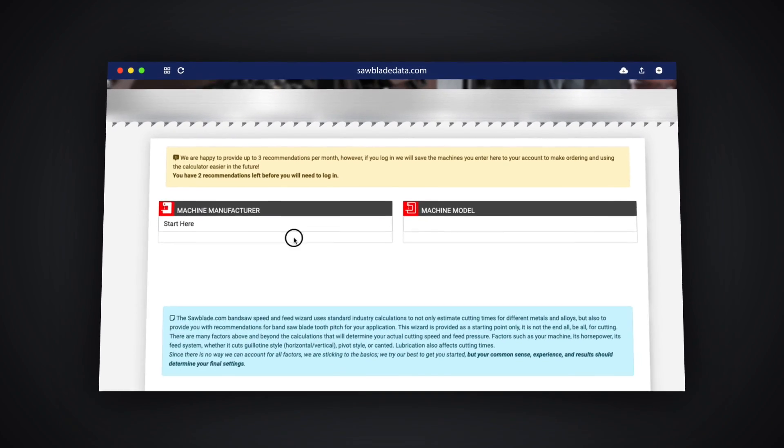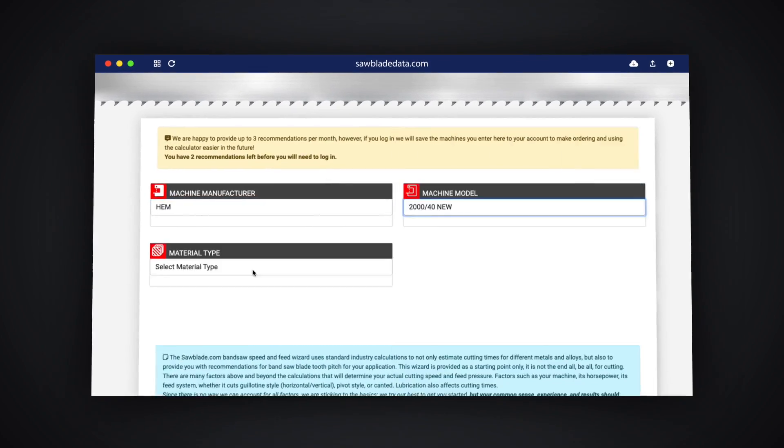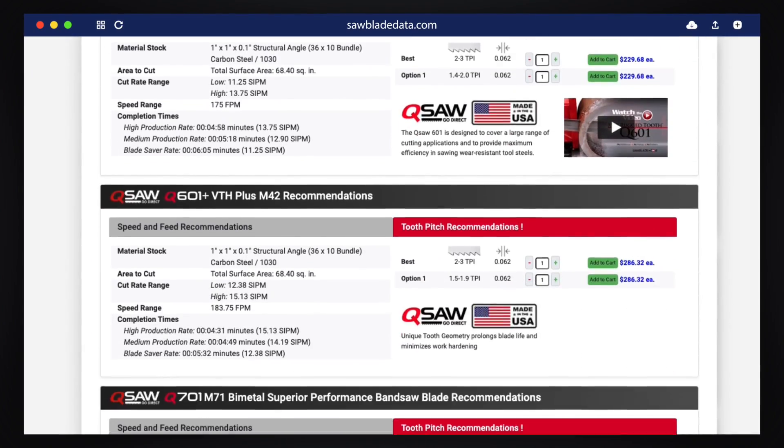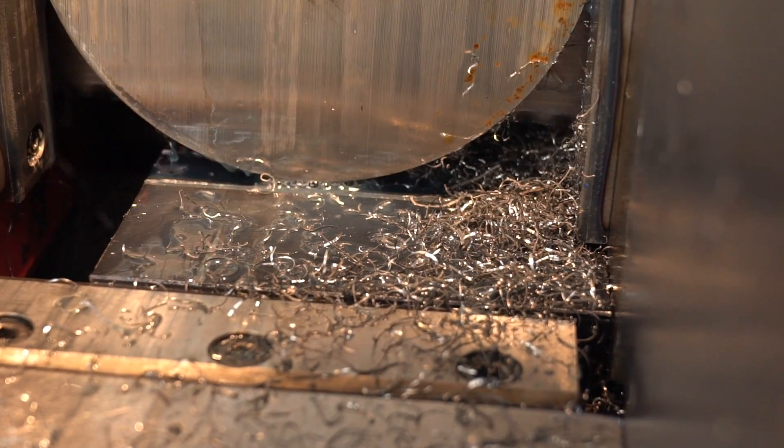Like I said, sawbladedata.com is a great engine to use. You can put in your material, your blade, and your machine specs and it's going to give you a good baseline. But here at Houston Metal Sawing we're going to take it a step further and we're going to be looking at the chips.